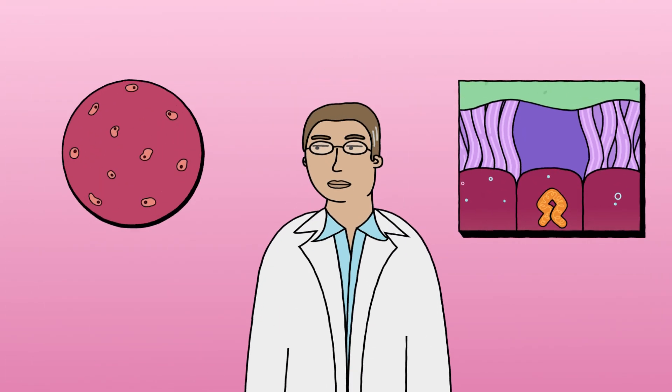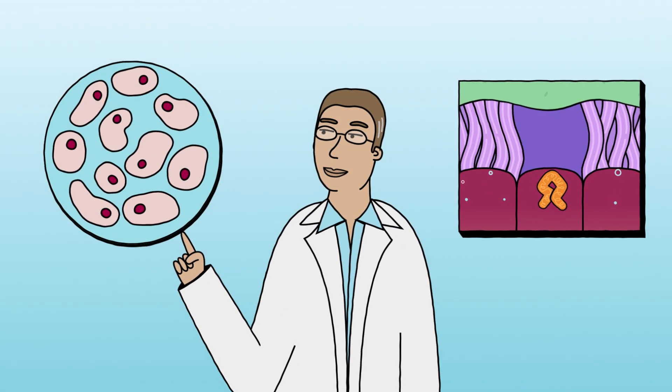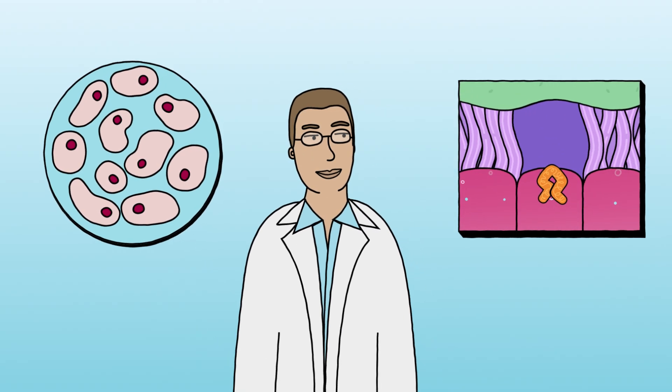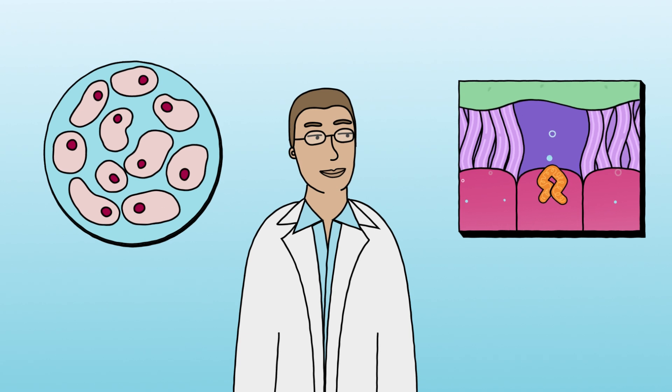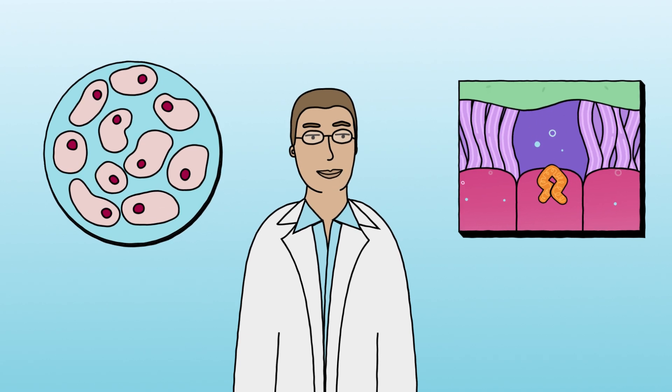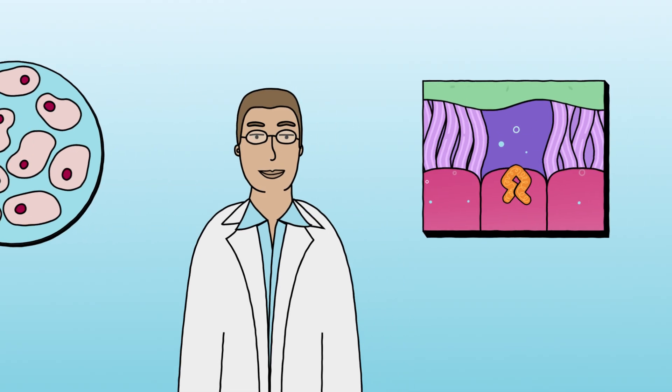Welch noticed that incubating cells containing defective CFTR at low temperature allowed some of the faulty protein to reach the membrane and work, if just partially. This clue hinted that the protein wasn't completely broken, and maybe, with some help, it could be rescued.